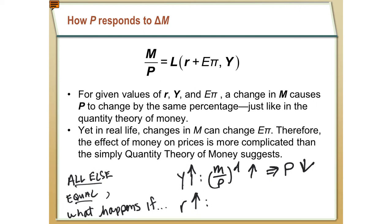This makes sense because if GDP is getting bigger and the number of dollars in the economy is staying the same — M is fixed — then we have the same number of dollars chasing more goods and services. There just aren't enough dollars to maintain the same prices, so for the same amount of money to facilitate more transactions, prices have to go down. So if income goes up, all else equal, the price level is going to go down.